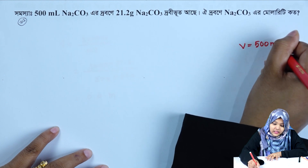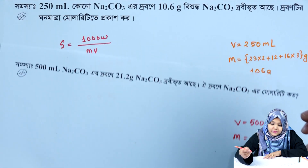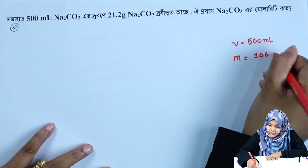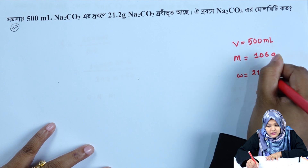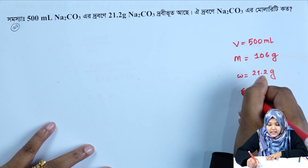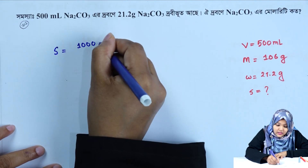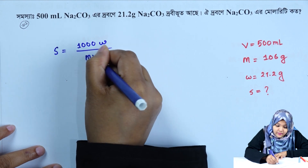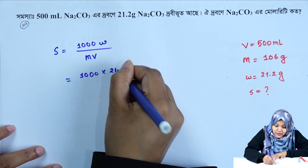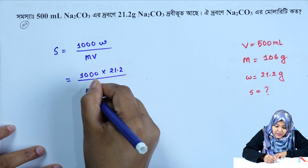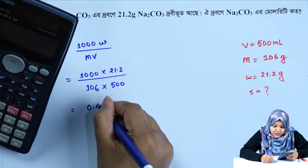Now for a volume of 500 milliliters, sodium carbonate is equal to 106 grams, so the mass required is 21.2 grams. Molarity is equal to 1000 w divided by m times v. So 1000 into w equal to 21.2, m equal to 106, v equal to 500. So sodium carbonate is equal to 0.4 molar.